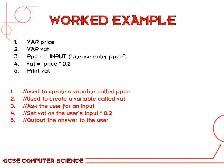Here's the pseudocode for the example we've just discussed. I've numbered all the different lines so it's easier to explain what's happening in each one. Line one: VAR price — we've created a variable called price. Line two: created a variable called VAT. These two variables give us an area in memory where we can store values.